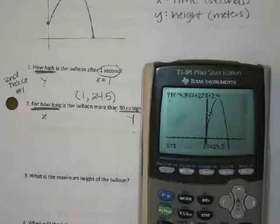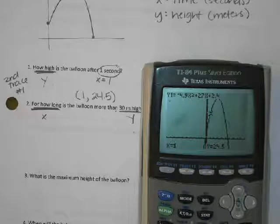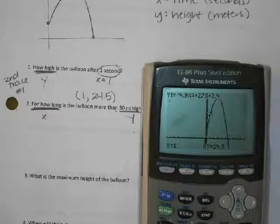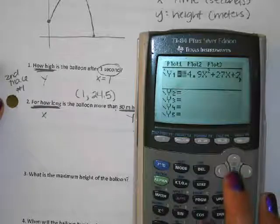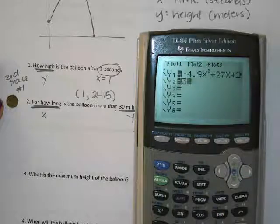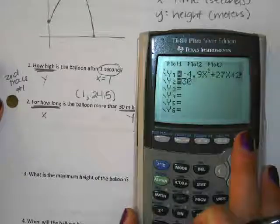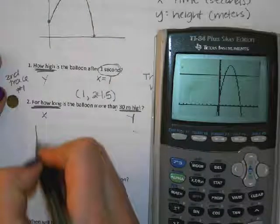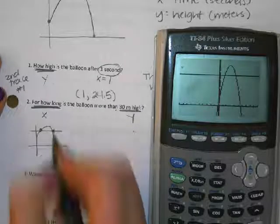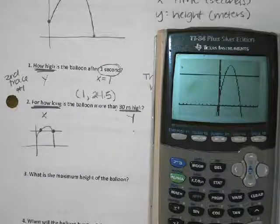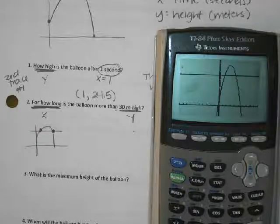This is the tricky one that a lot of students forget. Because they gave us a y, we're going to hit the y equals button and go down to y2 and put 30. This is like the only one where we don't do second trace right away. Then we are going to do second trace to find the intersection.